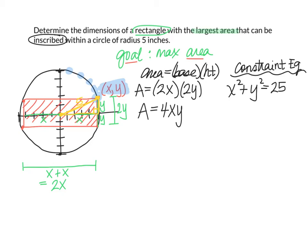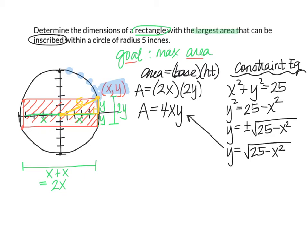So I'm going to use that equation and solve for one of the variables. It doesn't matter which one, I'm going to solve for Y. So I'll subtract X squared, then I will square root both sides. Technically, I will get the plus or minus square root of 25 minus X squared. But we actually don't need that plus or minus when we substitute. So I'm just going to use the principal root, the positive, which is the square root of 25 minus X squared.